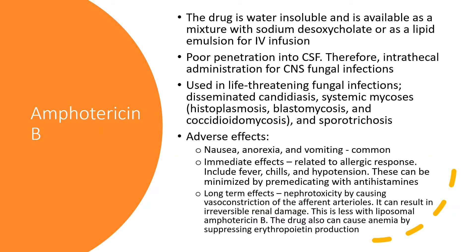First, we'll talk about amphotericin B. It's a water-insoluble form, so it is given only in intravenous form and it is not absorbed systemically. It is given only as an IV infusion. There are two forms of the medication: sodium deoxycholate, and the other one is as a lipid emulsion — we call it liposomal amphotericin B. The commonly used form is the liposomal amphotericin B, the lipid form, but there is also a sodium deoxycholate form.